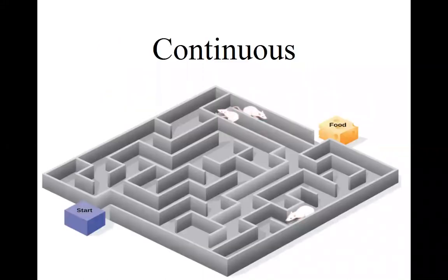These rats running the maze have continuous reinforcement. Every time they get through the maze, they find the primary positive reinforcer of food waiting for them. That's continuous reinforcement.